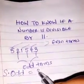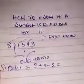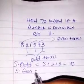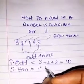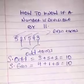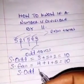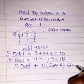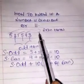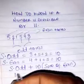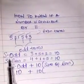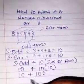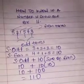The sum of the odd-position digits equals 3 plus 5 plus 2, which equals 10. The sum of the even-position digits equals 4 plus 1 plus 5, which equals 10. Now, sum of odds plus 10 times sum of evens: 10 plus 10 times 10 equals 10 plus 100, which equals 110.